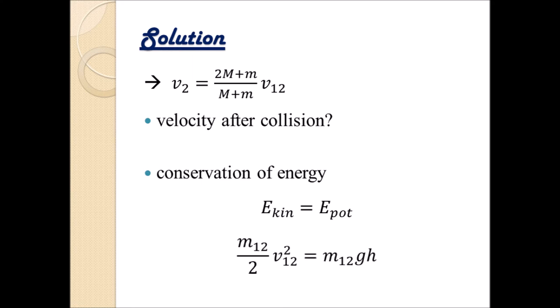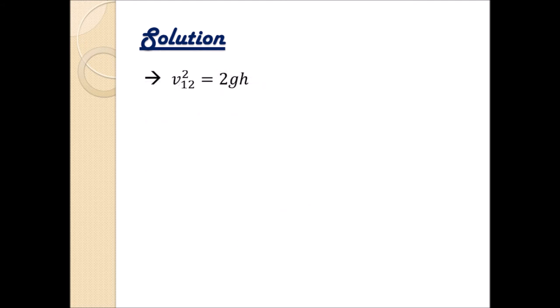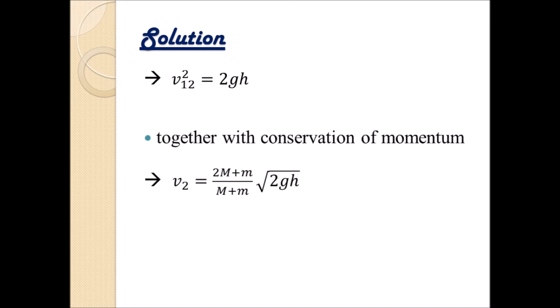Okay then we can use the basic equations for those two energies. We know that kinetic energy is always m divided by 2 multiplied with the velocity squared. In the current case it's the joint mass m12 divided by 2 multiplied with the velocity after collision v12 squared. And on the right hand side we have the potential energy, which is always the product of mass, in our case the joint mass, multiplied with the gravitational constant g and the height h. This actually helps us a lot because the masses cancel out on the left hand and right hand side and we can calculate the velocity after collision quite easily: v12 squared equals 2 times g times h.